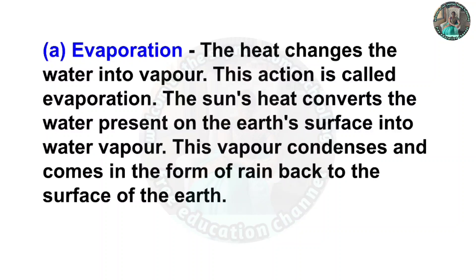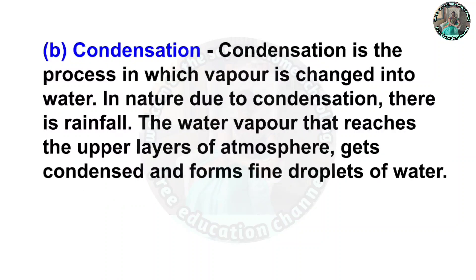Question five: Write a note about the following. A: Evaporation. Answer: Heat changes water into vapor; this action is called evaporation. The sun's heat converts the water present on the earth's surface into water vapor. This vapor condenses and comes back to the surface of the earth in the form of rain.